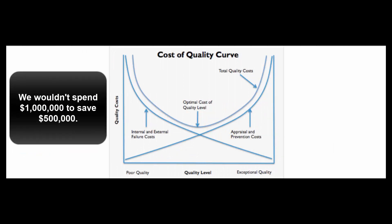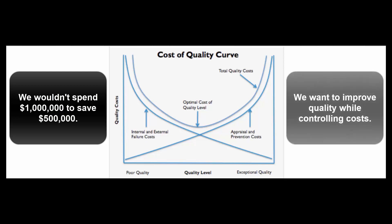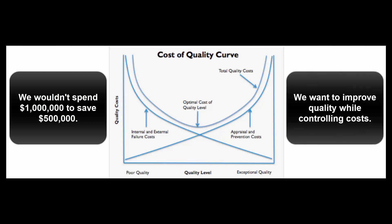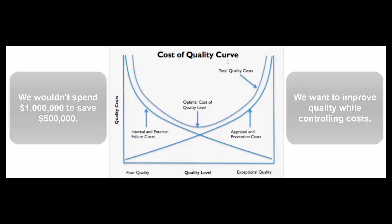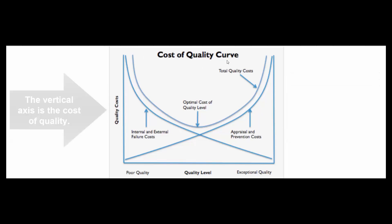One way to look at it might be to say, hey, we're not going to spend a million dollars to save five hundred thousand dollars. Another way might be to look at the cost of quality curve, which basically gets to the same concept.